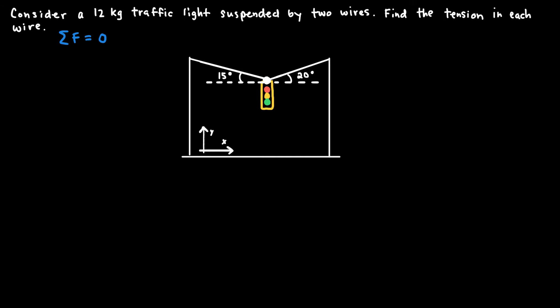To find the tension in each wire, I need to understand the directions and magnitudes of all forces acting on the traffic light, so I need to draw a free body diagram. I'll draw a red dot representing the point at the top of the traffic light where the two cables connect, and on that dot I'll draw all the forces as vectors pointing away from the dot. The first force is the weight of the traffic light, pointing directly down in the negative Y direction.